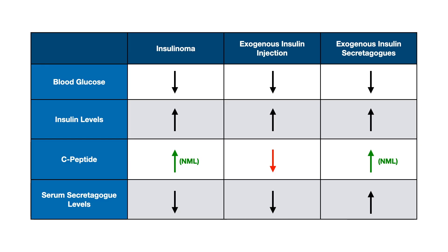So the C-peptide row is generally where you'll do the majority of your work figuring out which answer to select. But in the event that you have a normal or increased C-peptide, don't automatically assume you're dealing with an insulinoma — the test writer could have somebody abusing a secretogog.